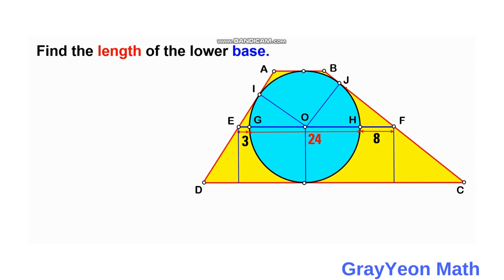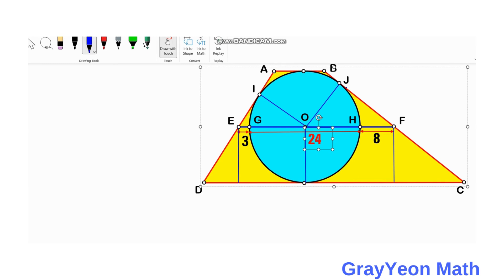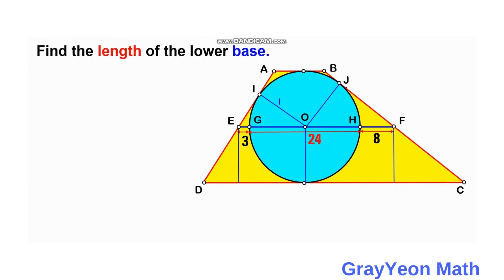First, we need to draw the radii. Since the diameter is 24, the radius will be 12. So from O to I is 12 units, O to J is 12 units, and from O to the bottom is also 12 units. These are the points of tangency, forming 90-degree angles.